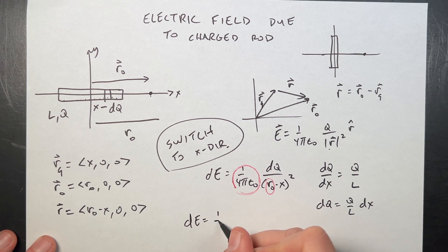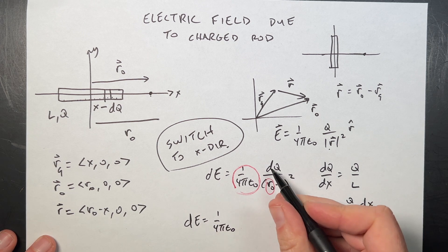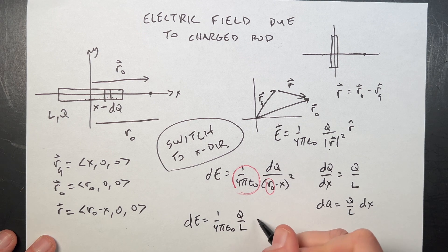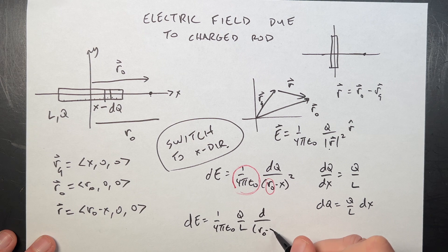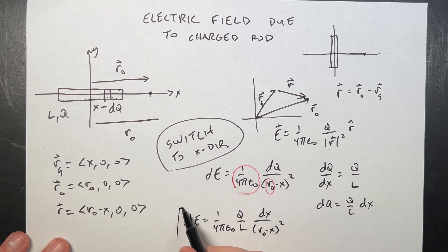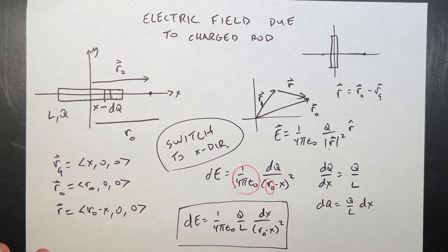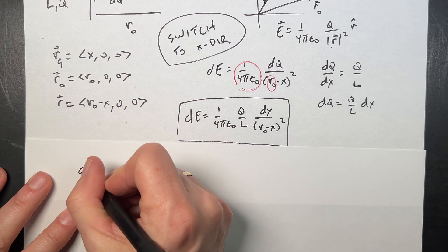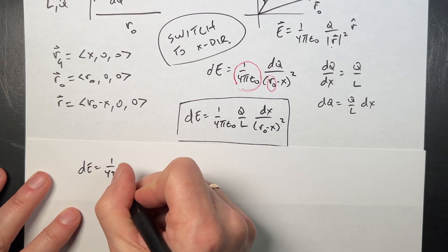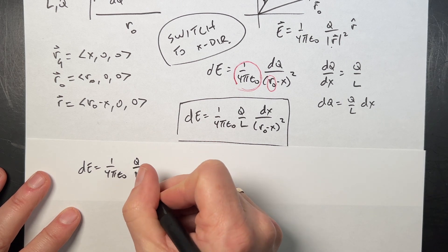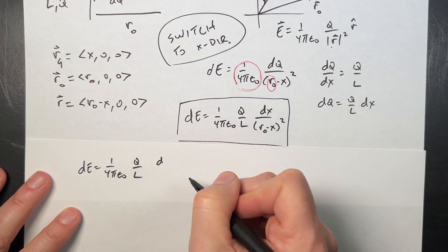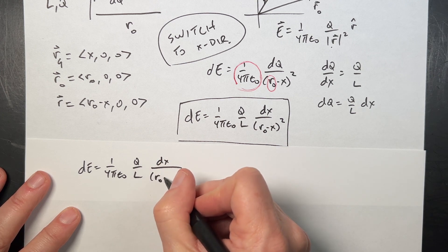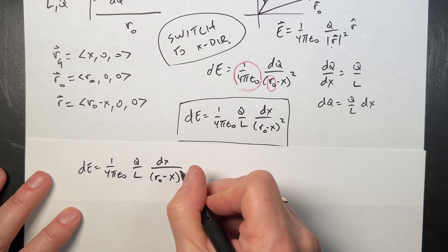dE equals 1 over 4π epsilon naught, dq, which is q over L dx over r0 minus x. I left off the x right there. So this is what I want to integrate. So let's integrate that on a separate sheet of paper. No point in trying to squish it all together. I'm just going to write it up here. dE equals 1 over 4π epsilon naught q over L dx over r0 minus x quantity squared.